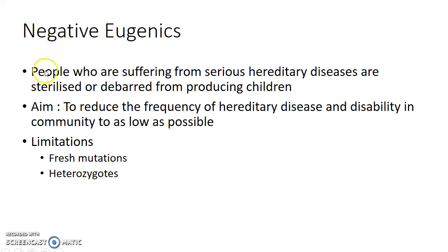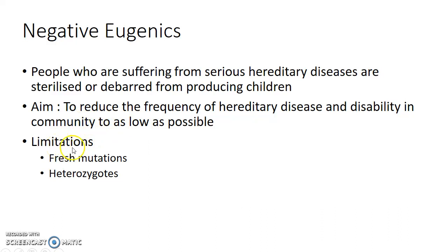In negative eugenics, people who are suffering from serious hereditary diseases are sterilized or debarred from producing children. The aim of negative eugenics is to reduce the frequency of hereditary disease and disability in the community to as low as possible. However, a key limitation is that new hereditary disabilities can occur due to fresh mutations and heterozygotes, which cannot be prevented by negative eugenics.